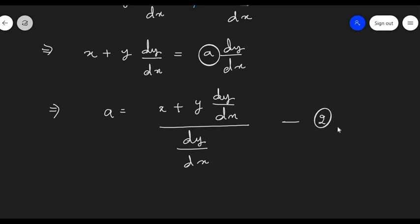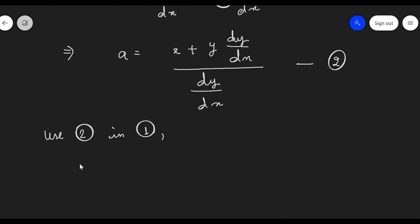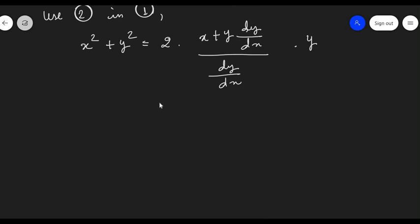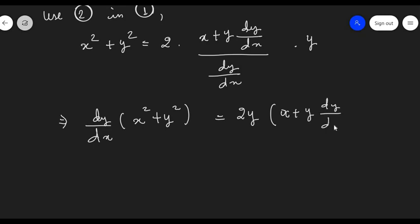And now, we need to substitute 2 in 1. So, I am going to get x² + y² = 2 × (x + y(dy/dx))/(dy/dx) × y. Let us take the dy/dx in denominator to the other side and simplify. So, I am going to get (dy/dx)(x² + y²) = 2y(x + y(dy/dx)).